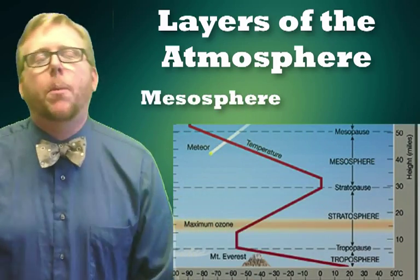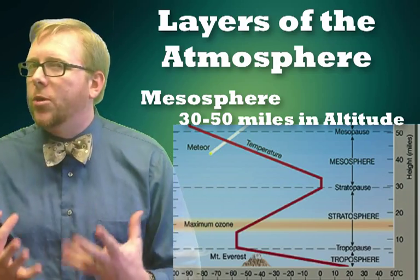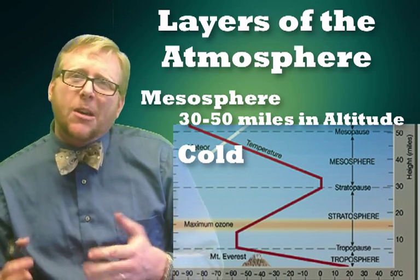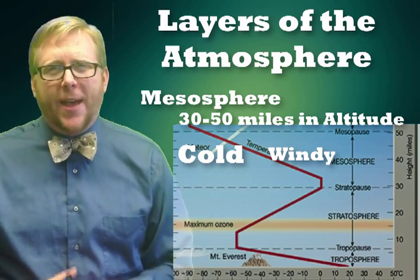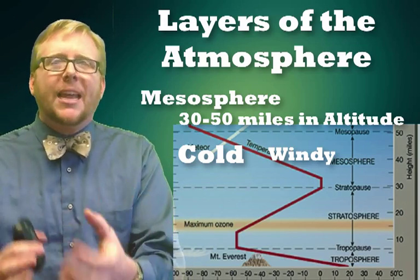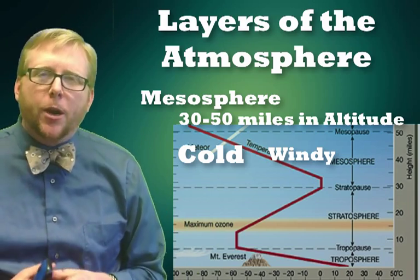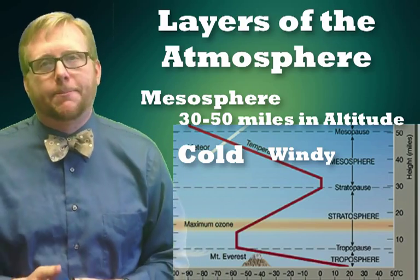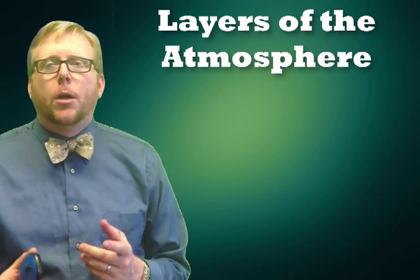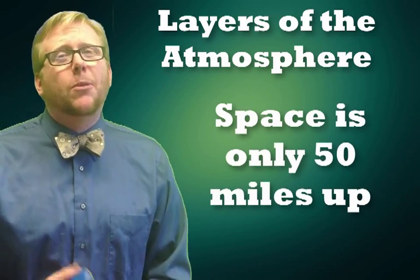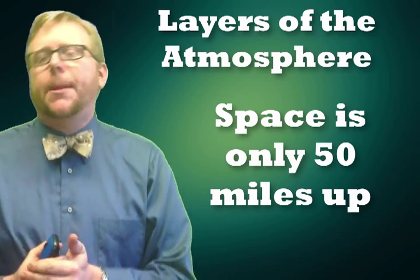Continuing up is the mesosphere, which goes from about 50 kilometers all the way up to 80 kilometers, or about 50 miles. It is the coldest layer — there's no ozone to shelter us and it's very thin, going down to about 135 degrees below zero. It's really windy with winds of 120 miles per hour. When you see a shooting star, that's actually occurring in the mesosphere, as a particle of sand or dust from space moves very fast and warms up through it. According to NASA, the mesosphere is really the boundary between Earth and space — 50 miles, roughly the distance from Sandy to Forest Grove.